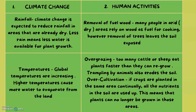Human activities is the second main cause, and it causes the removal of fuel wood. Many people in arid, dry areas rely on wood as a fuel for cooking. However, this has an adverse effect because the removal of trees leaves the soil exposed. Overgrazing is when too many cattle or sheep eat plants faster than they can regrow and rejuvenate. Also, trampling by animals and over-cultivation — which is when crops are planted in the same area continually and all the nutrients in the soil are used up — means that the plants can no longer be grown.